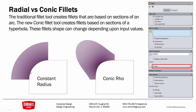With a constant radius, the curvature comb is identical — the radius is not changing along its length. But with a conic fillet, in this case defined by conic Rho, I can actually change the radius of this fillet. The radius is increasing along its length, creating more of a pushed-out kind of fillet that designers sometimes choose to use.